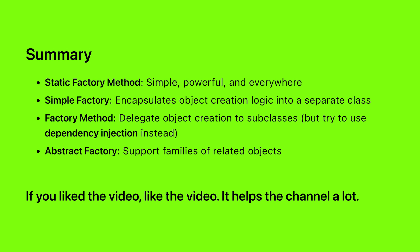In summary: the static factory method is simple, powerful, and everywhere. Simple factory encapsulates object creation logic into a separate class. The factory method delegates object creation to subclasses, but try to use it sparingly. And the abstract factory supports families of related objects. If you liked the video, like the video — it helps get this sort of thing in front of more people.